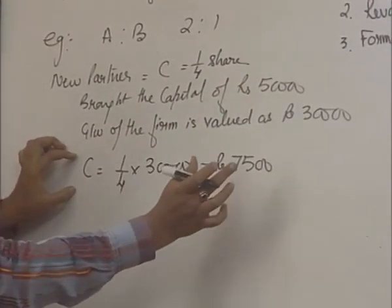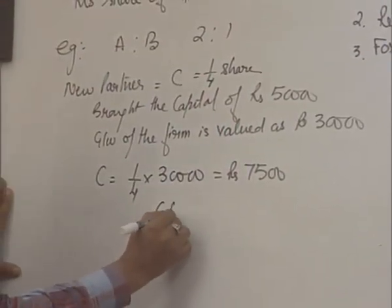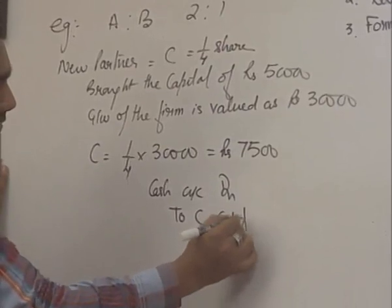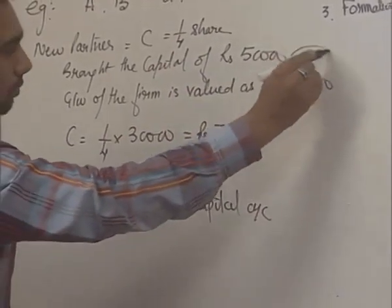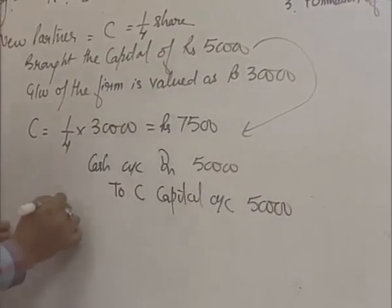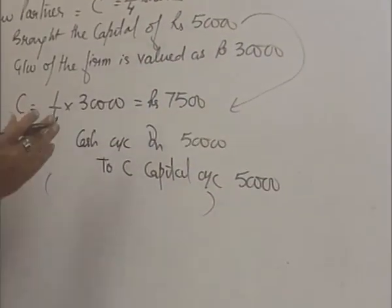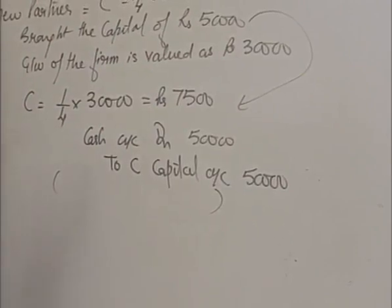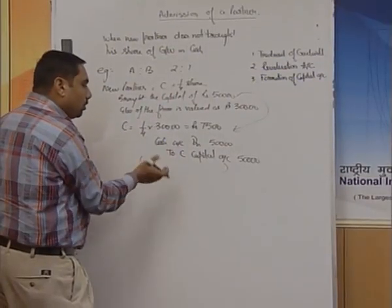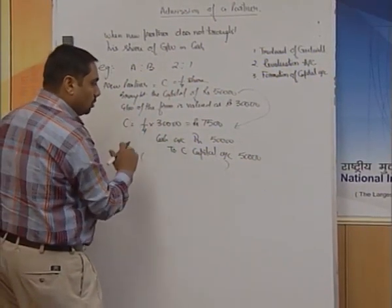C was supposed to bring this amount of rupees 7,500 as goodwill in cash, which he has not brought. So the first entry is: Cash Account debit to C Capital Account — because only the capital has been brought, which is 50,000. Now for the goodwill he has not brought, there are two possible conditions: either we take the amount of goodwill from his capital, or we can take it from his current account by opening a current account.